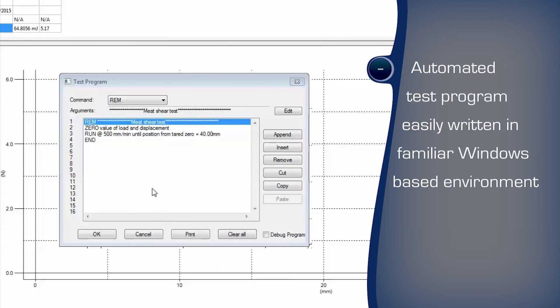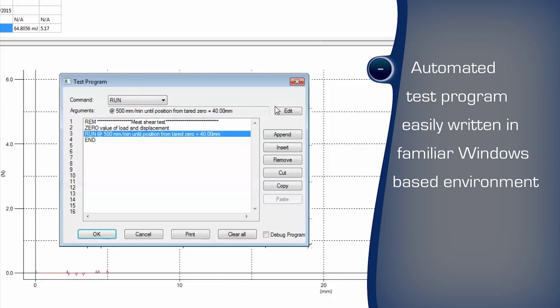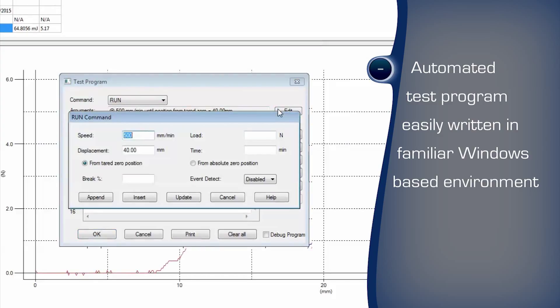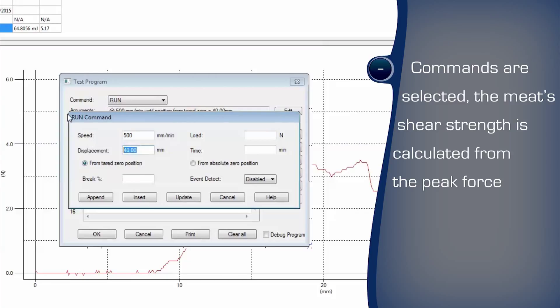The automated test program is easily written with the familiar Windows based environment. Commands are selected to perform the steps. The meat's shear strength is its cutting resistance force and strength is calculated from the peak force.